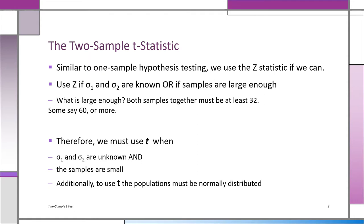To use the t, we also have to know that the underlying population is normally distributed. If we don't know that, we're making that assumption — sigma 1 and sigma 2 are not known, sample sizes n1 and n2 are small, and we assume the underlying populations are normally distributed. There are situations where we know we can't assume that because of previous research about the shape of the distribution, and then we have to work with non-parametric or distribution-free methods, which is not a topic for this class.